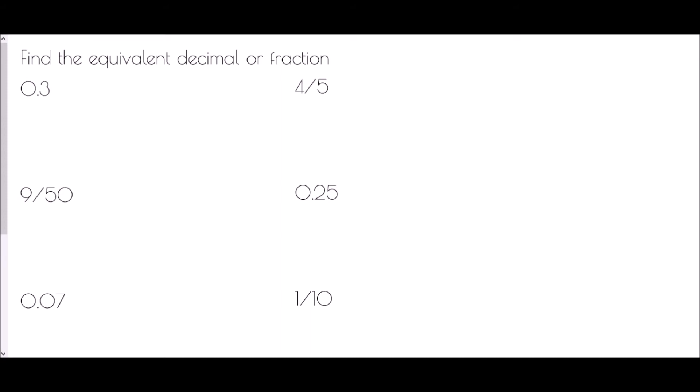For 0.3 as a fraction: the last digit relates to the tenths column, so the fraction is over 10. How many tenths do I have? Three tenths. Therefore 0.3 is three tenths.